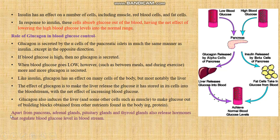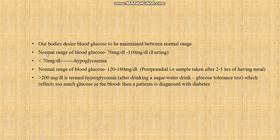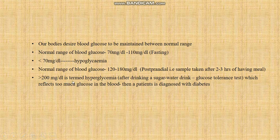Apart from these two hormones, adrenal glands, pituitary glands, and thyroid glands also release hormones that regulate blood glucose level in the bloodstream. Our body desires blood glucose to be maintained within the normal range. The normal range of blood glucose is between 70 mg per deciliter to 110 mg per deciliter in the case of fasting. The normal range is between 120 to 180 mg per deciliter in the case of PP — meaning the sample taken after two to three hours of having a meal.